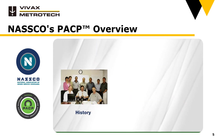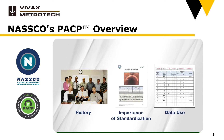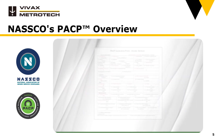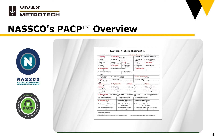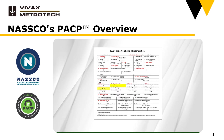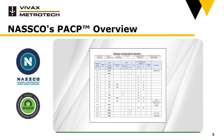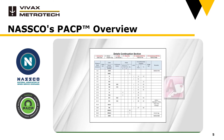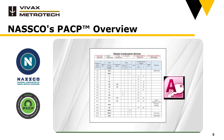Now that we've outlined the history, the importance of standardization, and how the data are used, let's look at the PACP inspection. A PACP inspection produces a summary of general information regarding a pipe's location and attribute data such as diameter, material, and shape. It also provides a detailed assessment of all visible defects, features, and other observations.